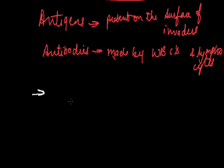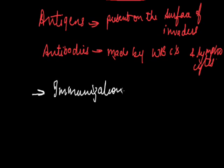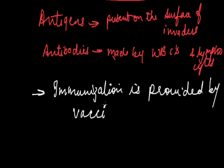Immunization can best be achieved by a process called vaccination, which is done by a vaccine. Antibodies remain in the blood for a long time, and when germs of a particular disease enter the body, the antibodies destroy them at a faster rate — this is the basis of immunization. Vaccination provides artificial immunity, whereas we also have natural immunity in our body, provided by the white blood cells.